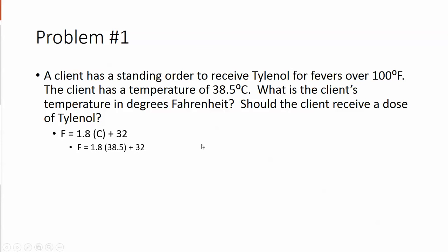Okay, so now you plug in the numbers because we know they had a temperature of 38.5 degrees Celsius. So it's Fahrenheit equals 1.8 times 38.5 plus 32.